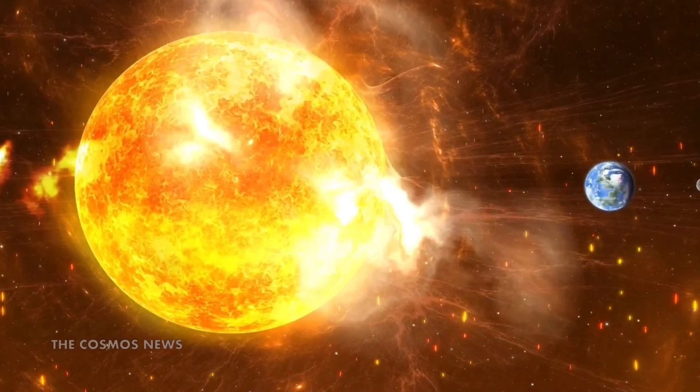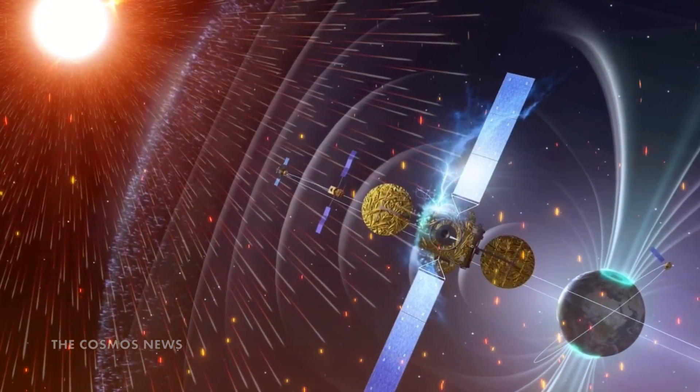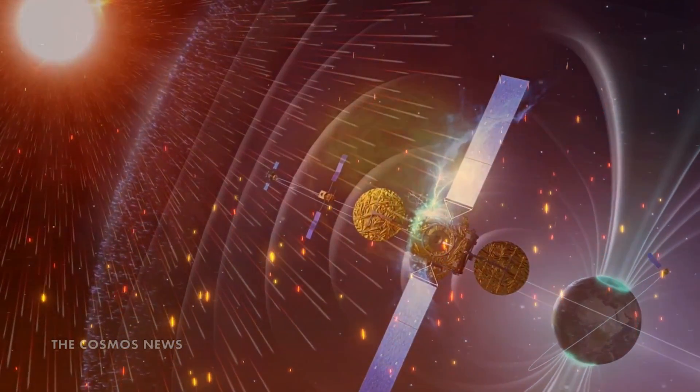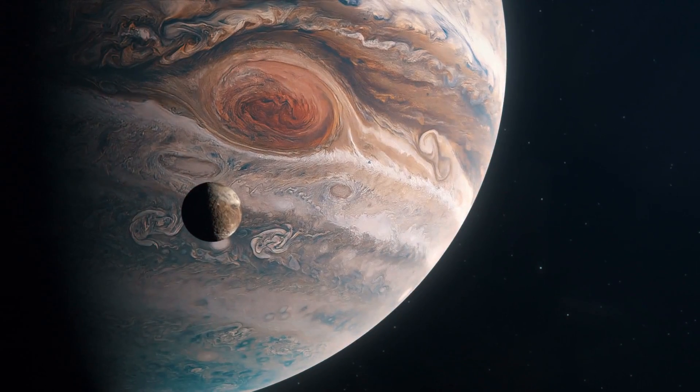Moreover, it's been said time and again that the Betelgeuse has become so large that if it were to replace the sun at the center of our solar system, its outer surface would extend beyond the orbit of Jupiter.